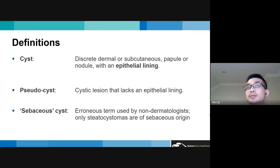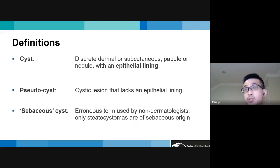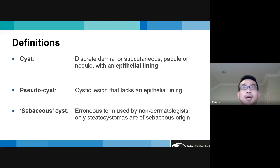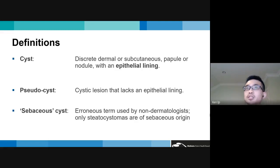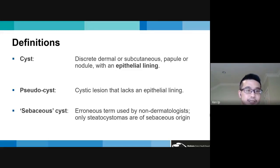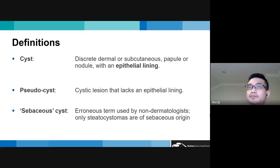One of the most commonly erroneously used terms is 'sebaceous cyst,' used by many non-dermatologists. But strictly speaking, only steatocystomas are of sebaceous origin, so the term sebaceous cyst is best avoided, as it's most commonly applied to epidermal cysts or pilar cysts, where the moist keratin content — the soft cheese-like contents — is mistaken as being of sebaceous origin.